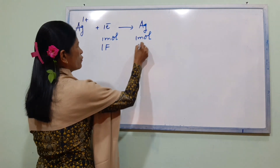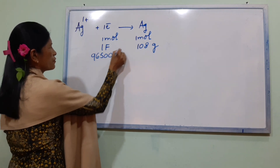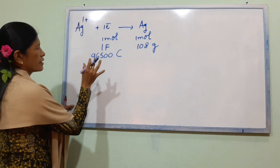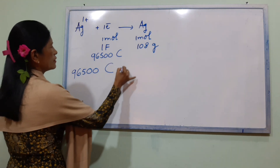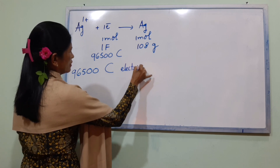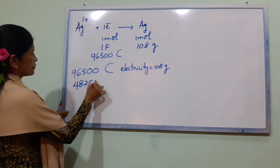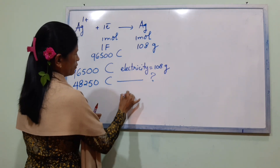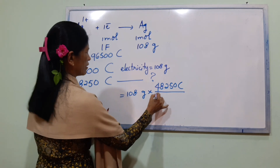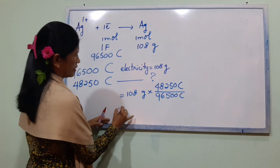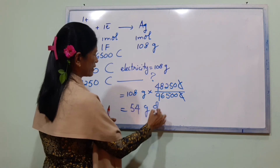For silver: Ag⁺ + 1 electron → Ag. One mole of silver is 108 grams, and 1 Faraday = 96,500 coulombs. For a charge of 48,250 coulombs: mass of silver = (108 × 48,250) / 96,500 = 54 grams of silver.